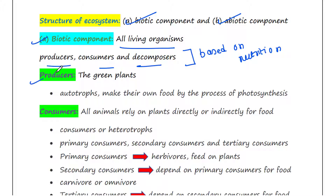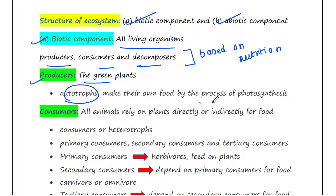The green plants in the ecosystem are called producers. They are also called autotrophs, since they can make their own food by the process of photosynthesis.